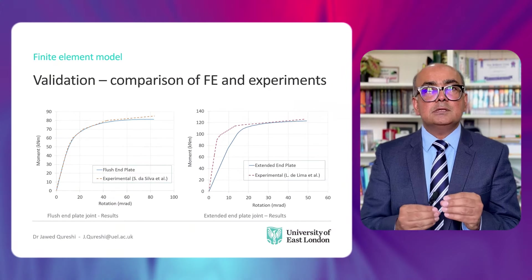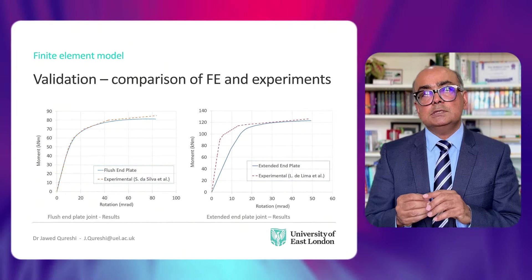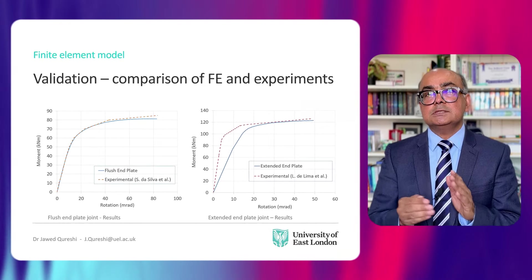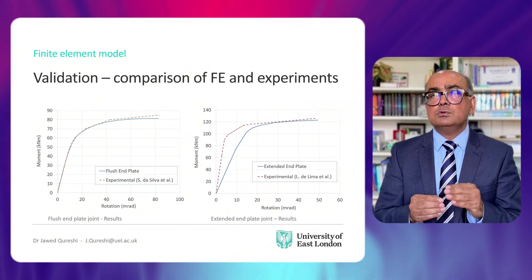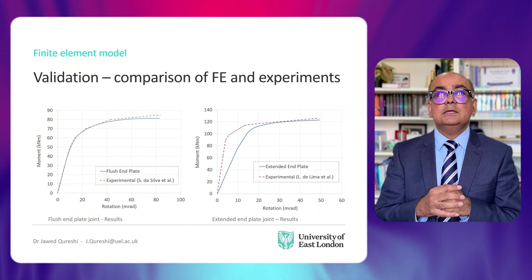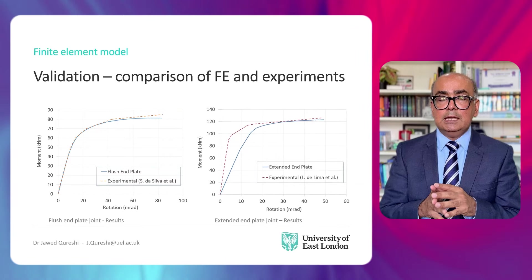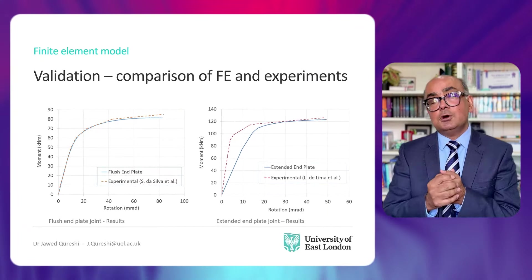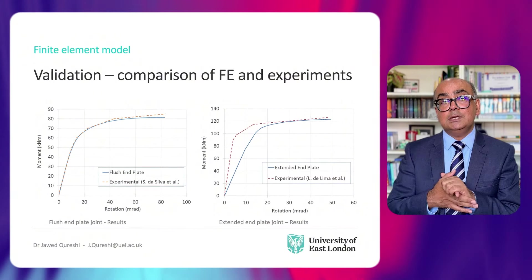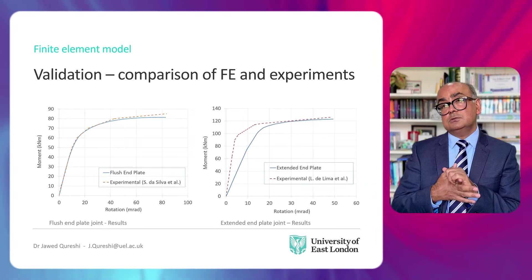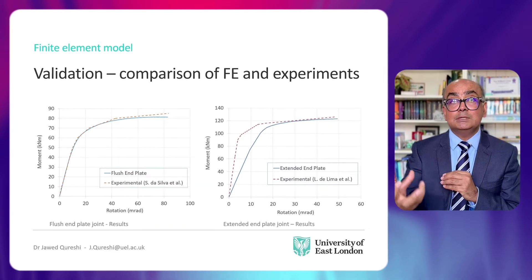This slide shows the comparison between finite element modeling results and experiments. Moment-rotation of joints is compared. Dashed lines show experimental results and solid lines show finite element modeling. The graph for the flush end plate indicates a very close correlation between the experiment and the FE model. For the extended end plate, the FE model graph is stiffer than the experiment — the reason is unknown; it may be bolt torque or slightly different material properties. However, the moment capacity shows a close match for the extended end plate as well.